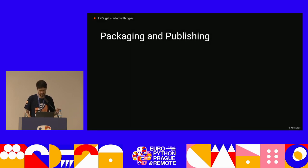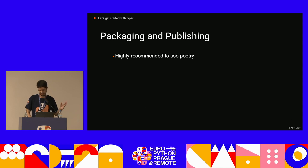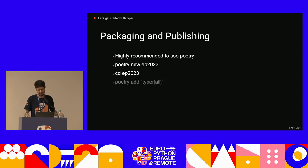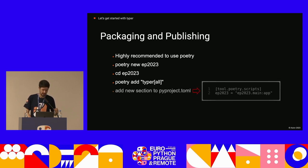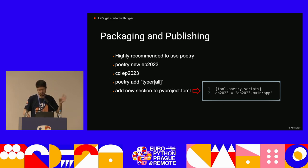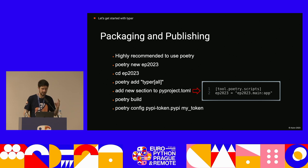About packaging and publishing: the recommended way is using Poetry. Here's a one-minute quick resume — create a new Poetry project, enter the project folder, add your Python packages. Poetry doesn't create a CLI by default, so you open pyproject.toml and add two specific lines: your CLI application name (we call it ep2023) and the path to the function you want to execute when running your CLI. Then tell Poetry to build, add a PyPI token, and publish to PyPI. That's about it — ready to be shared with anyone.